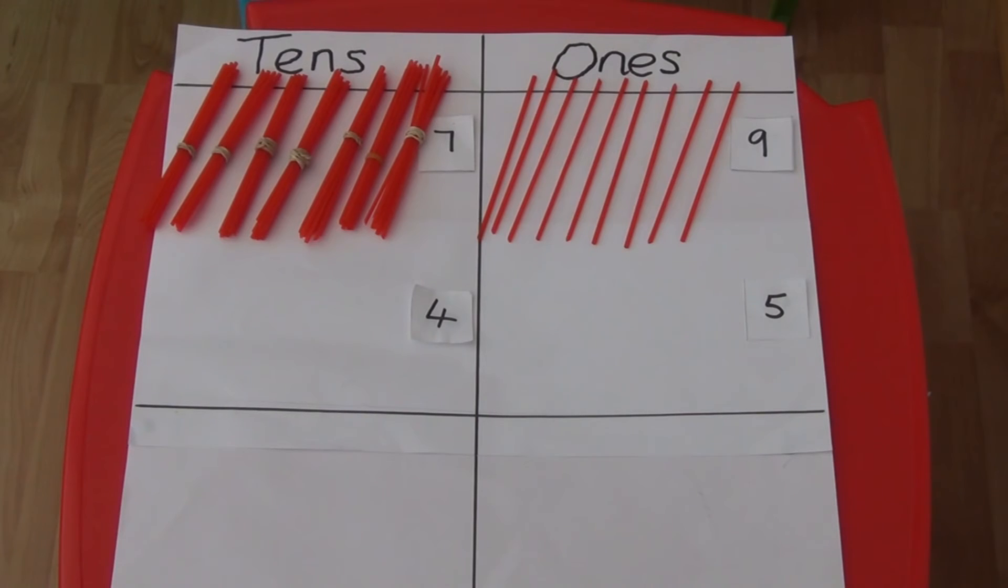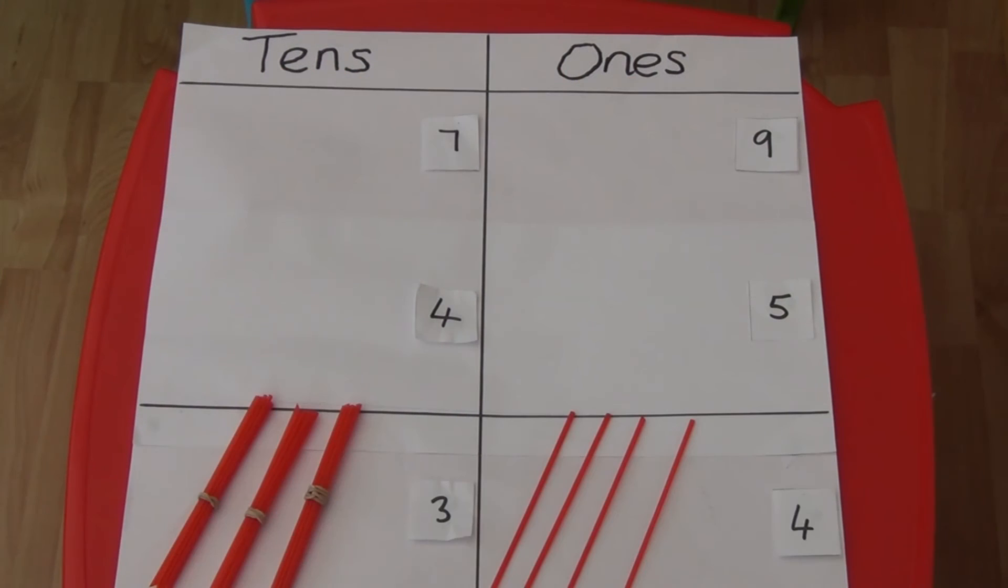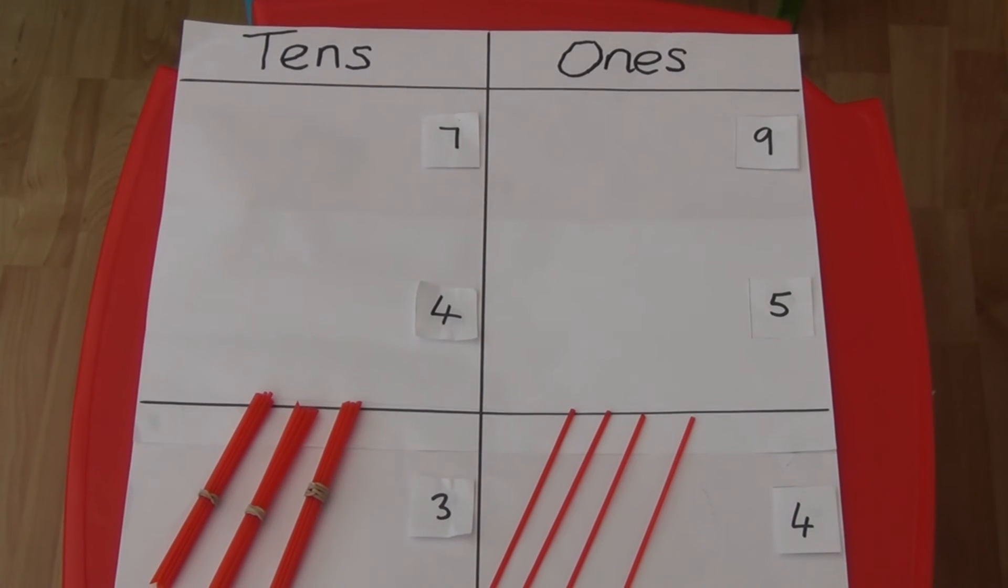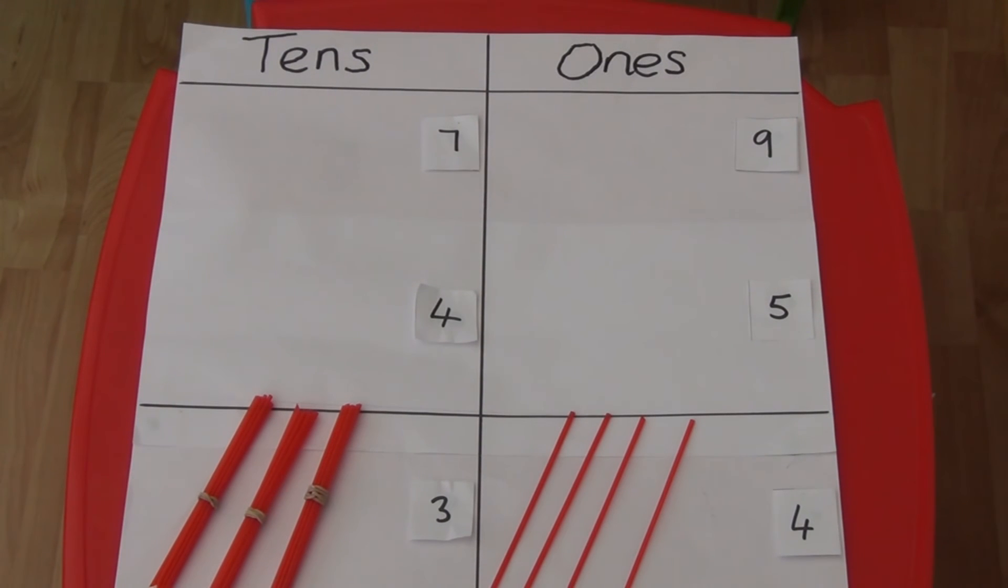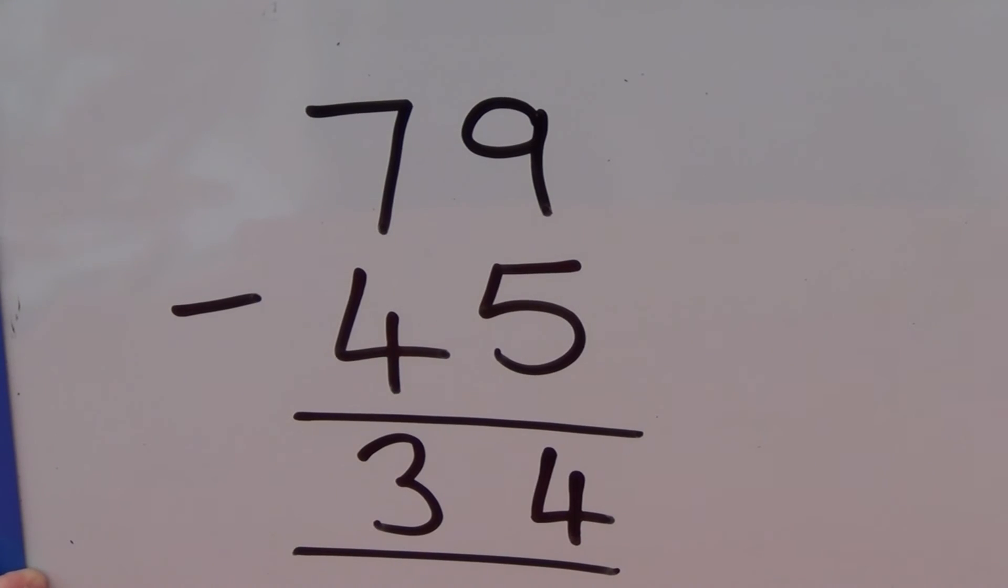For 79 we have 7 tens and 9 ones and I've stuck 4 and 5 for the number of tens and the ones below. We work out 9 take away 5 first which leaves us with 4 straws in the answer box. And 7 straws take away 4 leaves us with 3 tens which is 30. We can see this as written method without the straws. So 79 take away 45 equals 34.